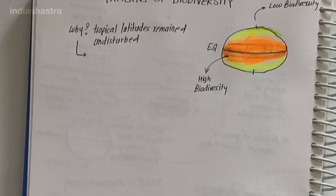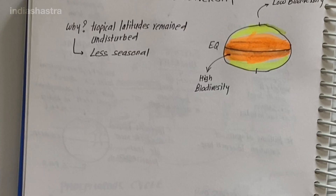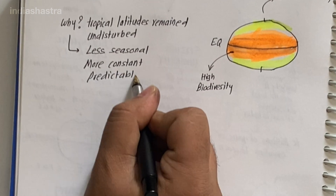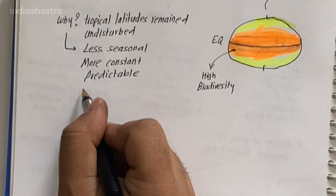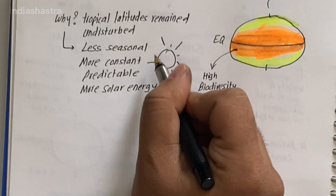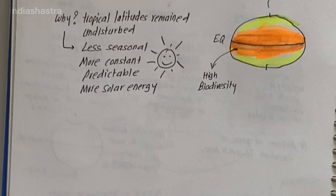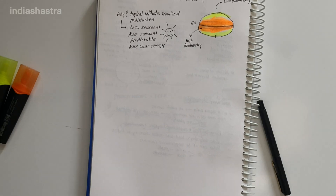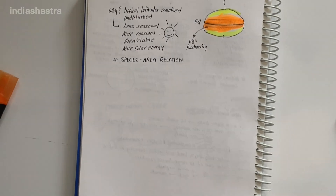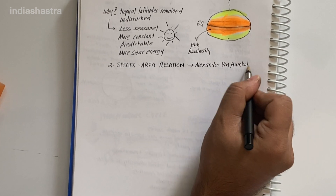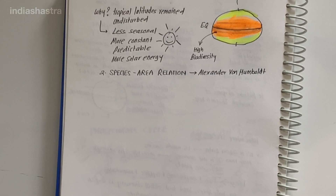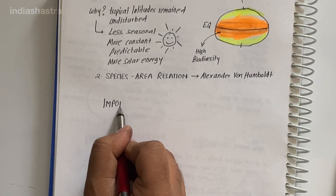Tropical environments are less seasonal, relatively more constant and predictable. Such constant environments promote niche specialization and lead to greater species diversity. There is also more solar energy available in the tropics, which contributes to more species diversity near the equator. Regarding species-area relationships, the great German naturalist Alexander von Humboldt observed that within a region, species richness increased with increasing explored area, but only up to a limit.